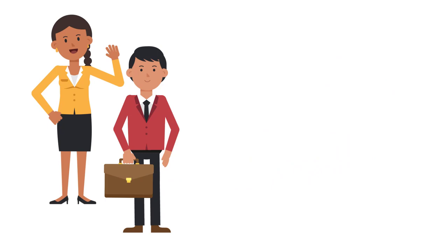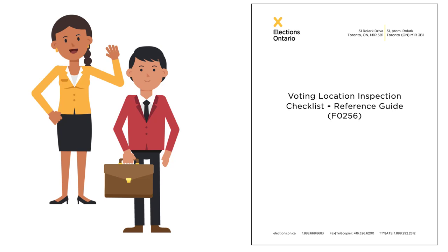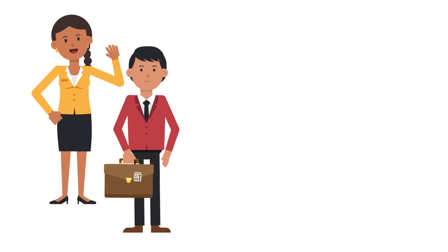Each pair should have the Voting Location Inspection Checklist for each location, the Voting Location Inspection Reference Guide, the Voting Location Inspection Kit, the Voting Location Inspection ID Letter, and their Elections Ontario ID Badges.